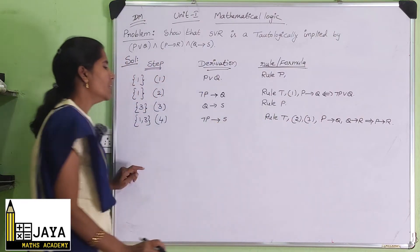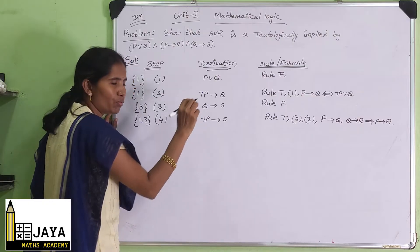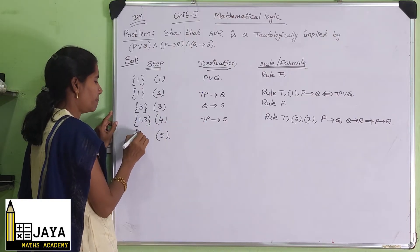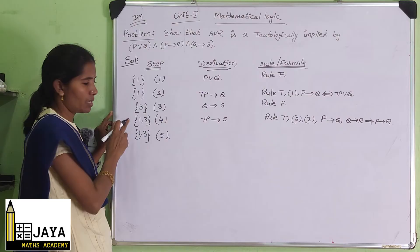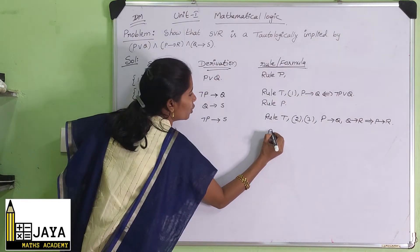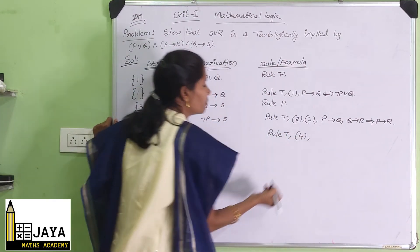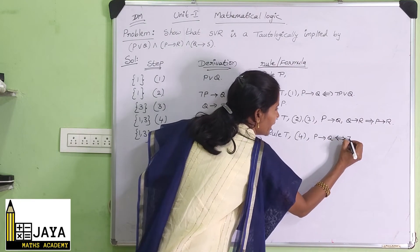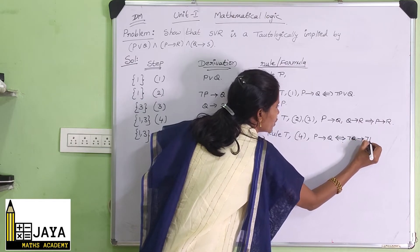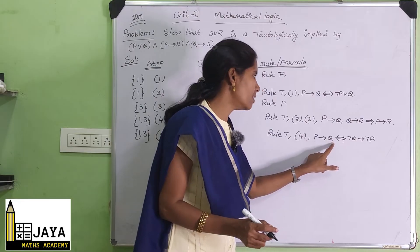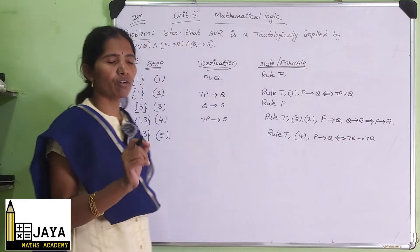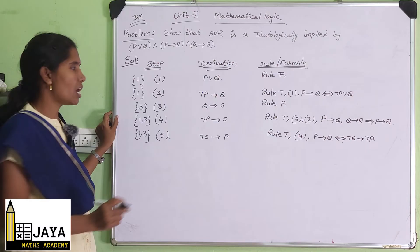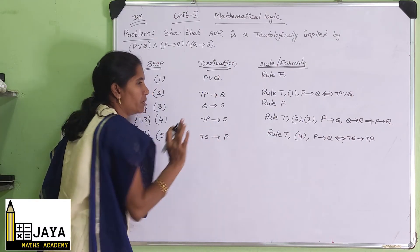In the fifth step, we apply another formula to step 4. Using P implies Q, which is equivalent to negation Q implies negation P — the contrapositive formula. So from negation P implies S, we get negation S implies P (since negation of negation P is P). Premise numbers are 1 and 3. Step 5: negation S implies P, Rule T, step 4.